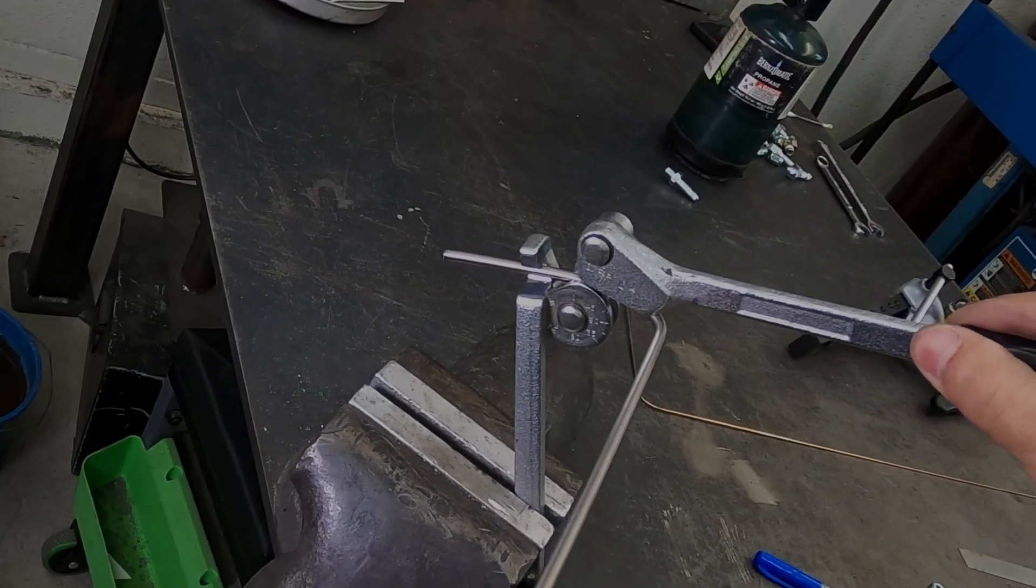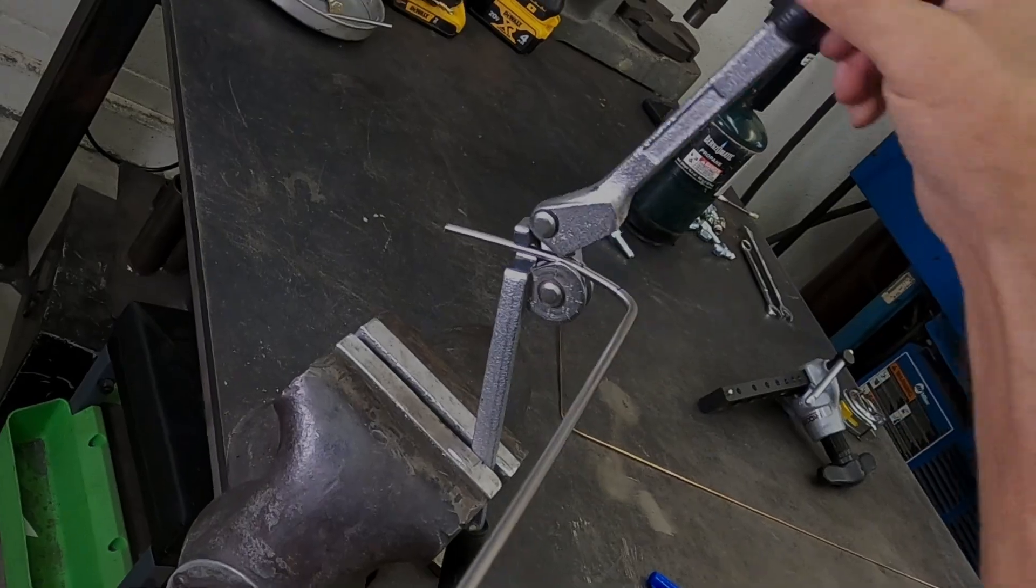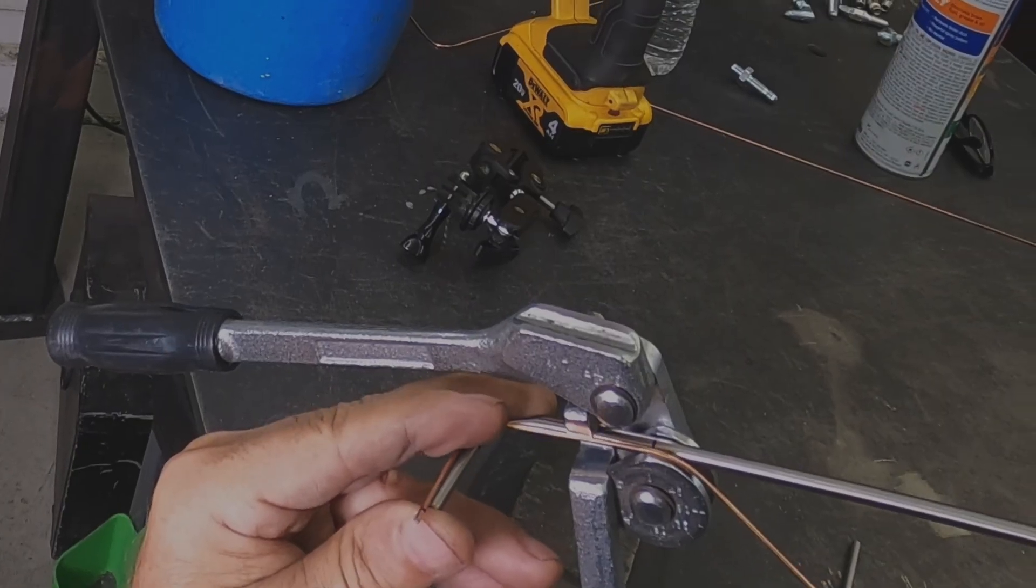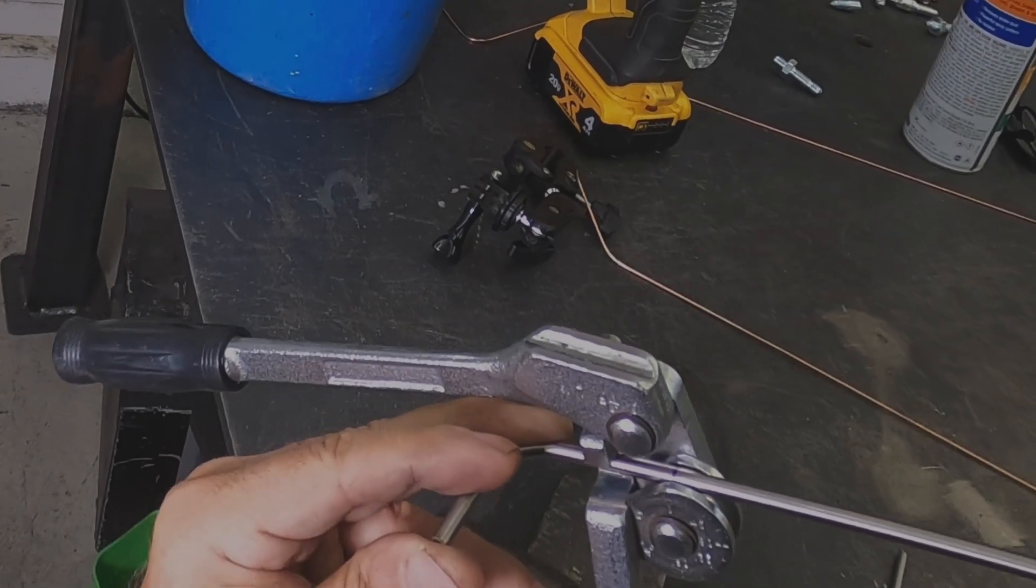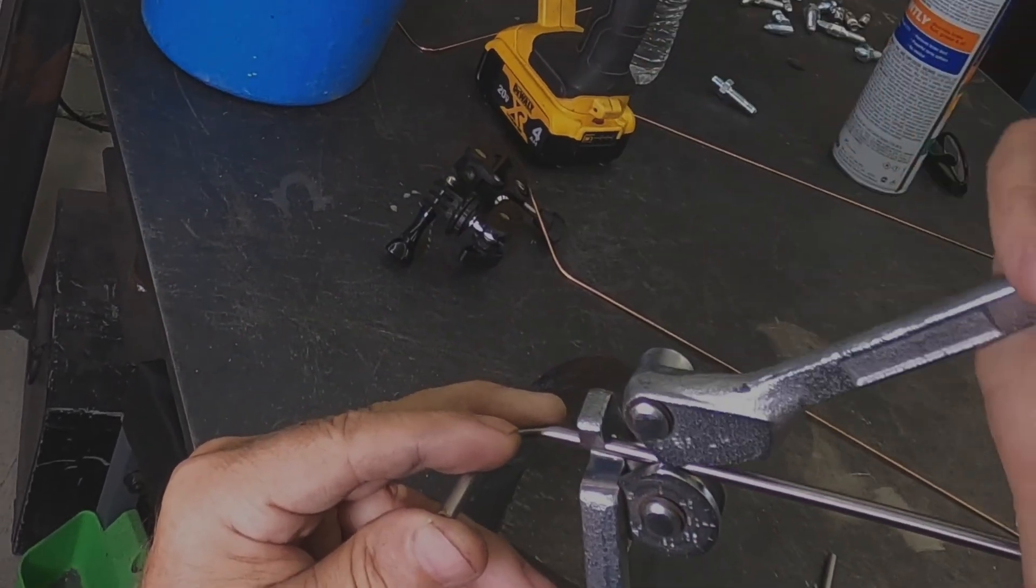The radius of the bend takes up some real estate. The radius on my bender is about 7/16 of an inch so that dimension has to be factored in on the starting point.